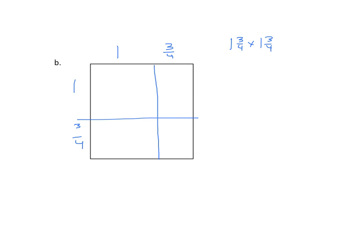We find our partial products. One times one is one. One times three-fourths is three-fourths. One times three-fourths is three-fourths. And three-fourths times three-fourths is nine-sixteenths. We'll find the sum. So we have one plus three-fourths plus three-fourths plus nine-sixteenths.